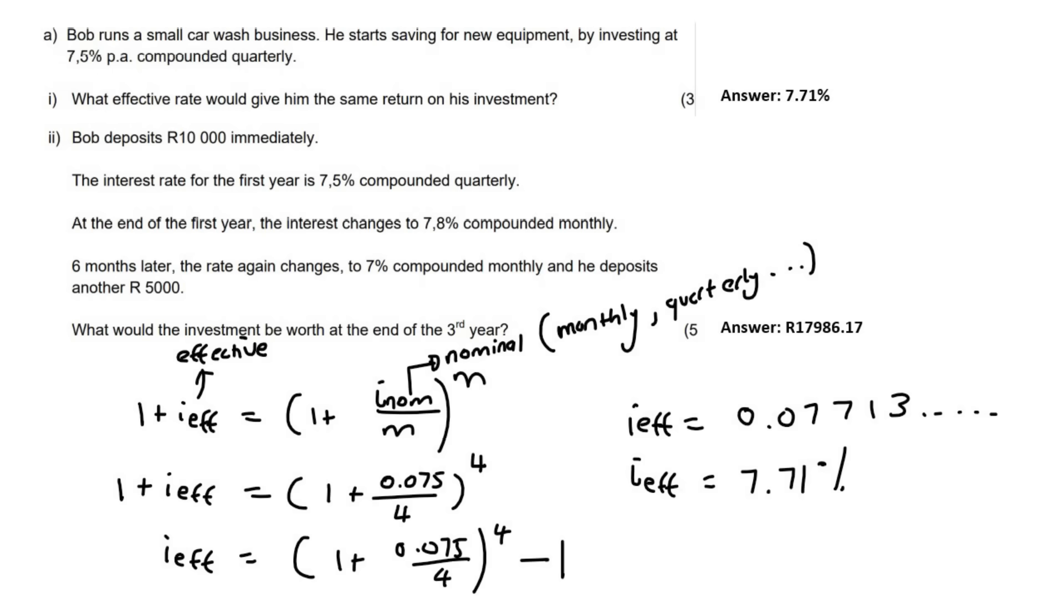Now we're going to move on to question two, which says that Bob deposits 10,000 Rand immediately. They tell us what the interest rate is. And then at the end of the first year, the interest rate changes again. And then six months later, the interest rate changes again, and he adds more money. So this is definitely something we will typically want to put on a timeline, because it just helps us to visualize everything a lot better.